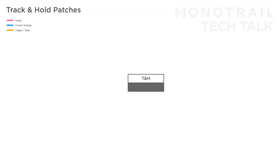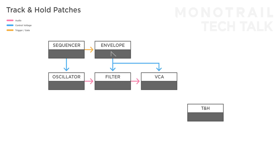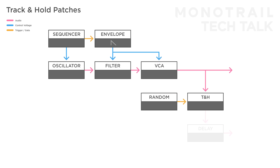When you have a simple voice creating a melody, you can multiply the output signal — send one copy to a mixer so you can hear the voice on its own, but send the other copy to a track and hold module. Send the track and hold a random voltage; every time the random voltage is high enough, the incoming audio is tracked and passed on. You can then send these random snippets of audio to something like a delay or other effects module.